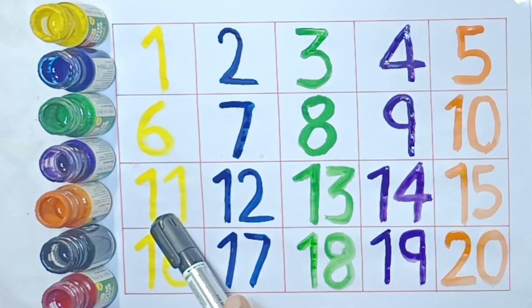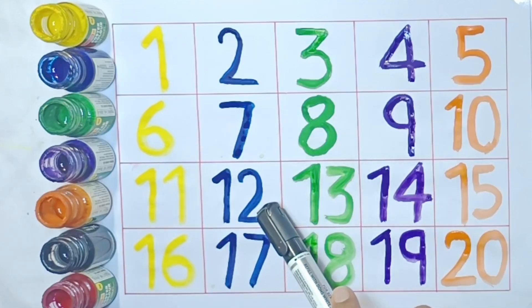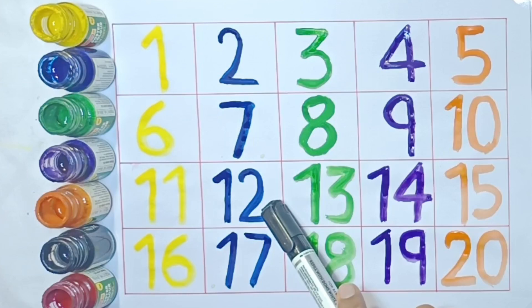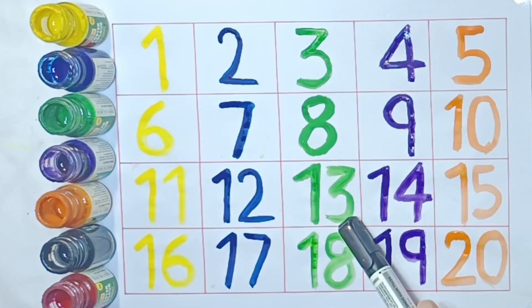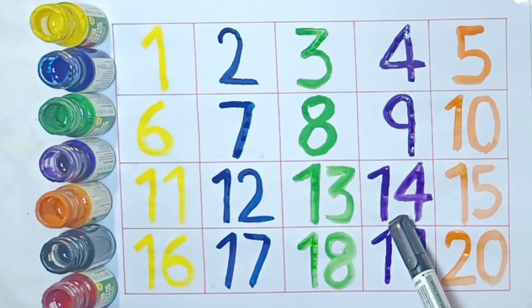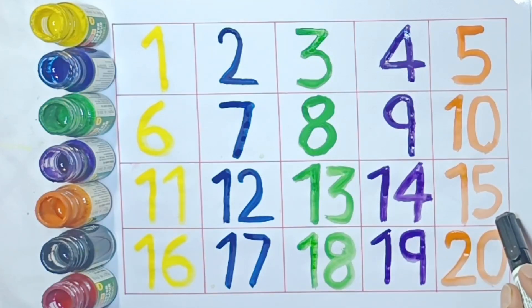11. E-L-E-V-E-N-11. 12. T-W-E-L-V-E-12. 13. T-H-I-R-T-E-E-N-13. 14. F-O-U-R-T-E-E-N-14. 15. F-I-F-T-E-E-N-15.